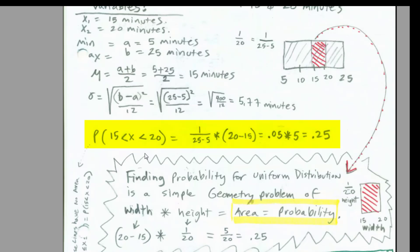We can also calculate the probability between 15 and 20 minutes. There's the height. There's the width, 0.05 times 5 equals 0.25. It's all about geometry. Area equals probability. That little piece right there, the width is 20 minus 15. The height is 1/20th. You multiply them, and boom. There's your probability.